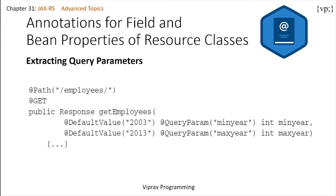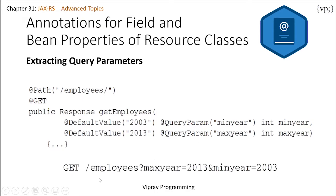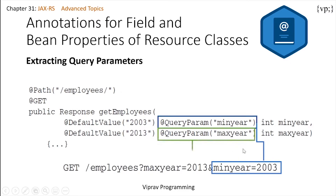Let's take a look at an example which takes in any query sent through a URL after the question mark. You'll see that the queries sent are the maximum year and your minimum year. The @DefaultValue annotation simply defines a default value, which means that if there's no query parameter sent through, this default value will be taken instead of the query parameters.